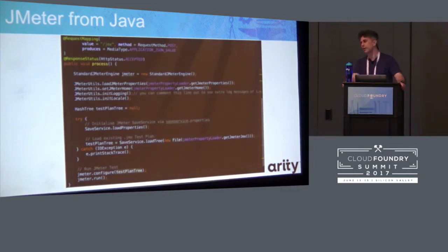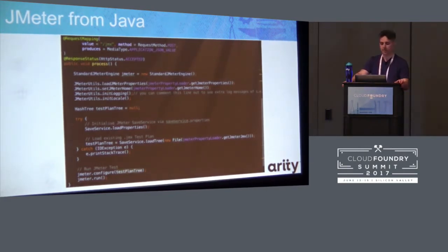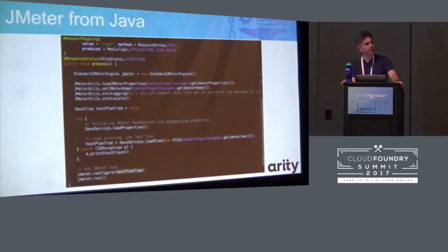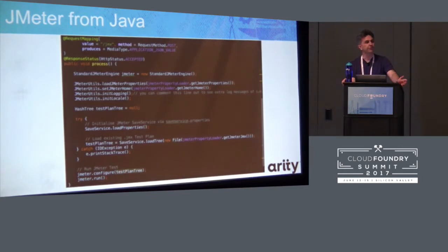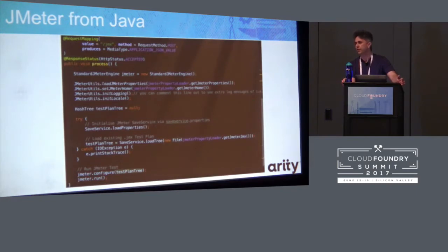To hit our target of 7,000 simulated users, we needed 14 instances of the application deployed. The minute you go down that route, you run into one very significant issue: orchestration. The reason orchestration becomes such a big issue is because the instances themselves are load balanced, so there's no easy way to send a message to tell all instances to kick off — the load balancer will simply send the message to just one instance.